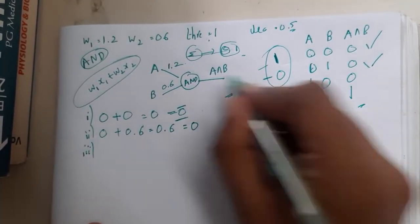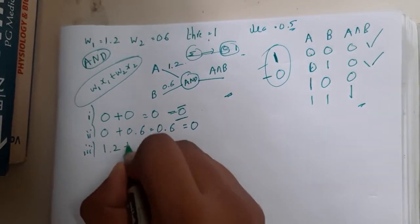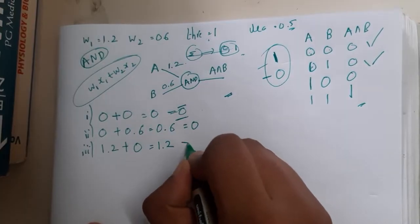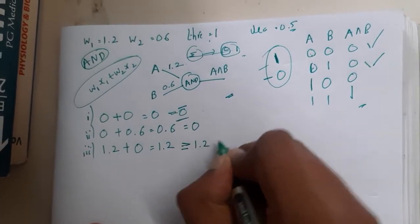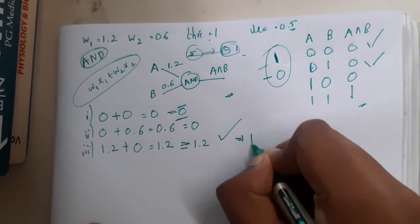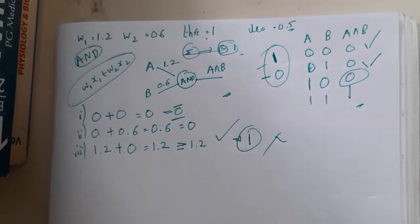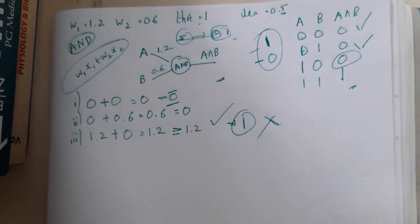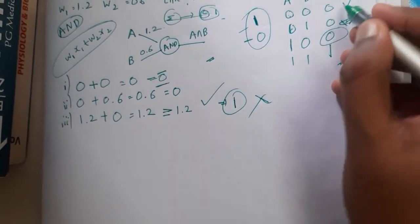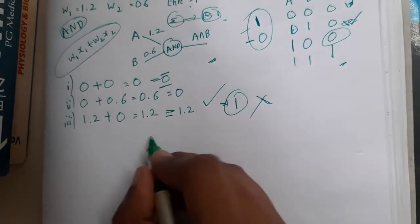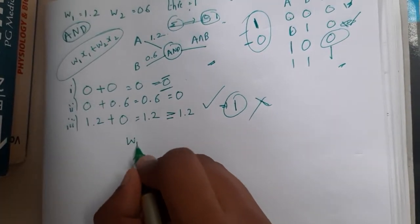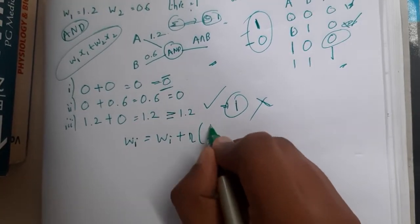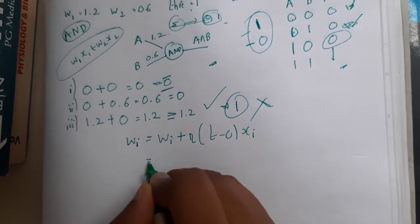Third case: A=1, B=0. 1×1.2 = 1.2, 0×0.6 = 0, sum = 1.2. Since 1.2 is greater than or equal to 1, output is 1. But the target is 0 — it does not match. So we need to update the weights and restart the process.